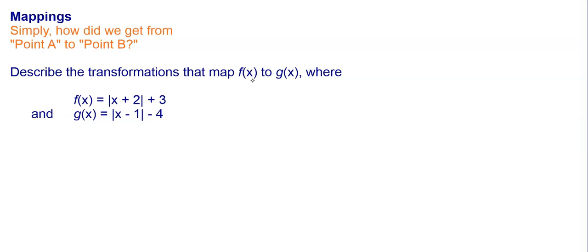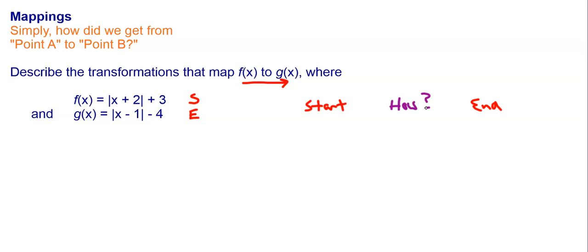Sometimes we may just be given the equations, not the graphs. One way of tackling this is to go to Desmos and graph both of them, but you can also do this without graphing. We know that we want to go from f of x to g of x — f of x is our starting point, and g of x is our ending point. We just compare the different parts of the equations. For example, we can look at the outside numbers. We're starting at three and ending at negative four. How do we get there? That's going to be minus seven — three minus seven is negative four. So minus seven on the outside means down seven.